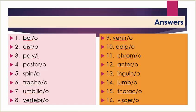Answers. Number one: bolo. Number two: disto. Number three: pelvi. Number four: postero. Number five: spino. Number six: tracheo. Number seven: umbilico. Number eight: vertebro. Number nine: ventro. Number ten: adipo. Number eleven: chromo. Number twelve: antero. Number thirteen: inguino. Number fourteen: lumbo. Number fifteen: thoraco. Number sixteen: viscero.